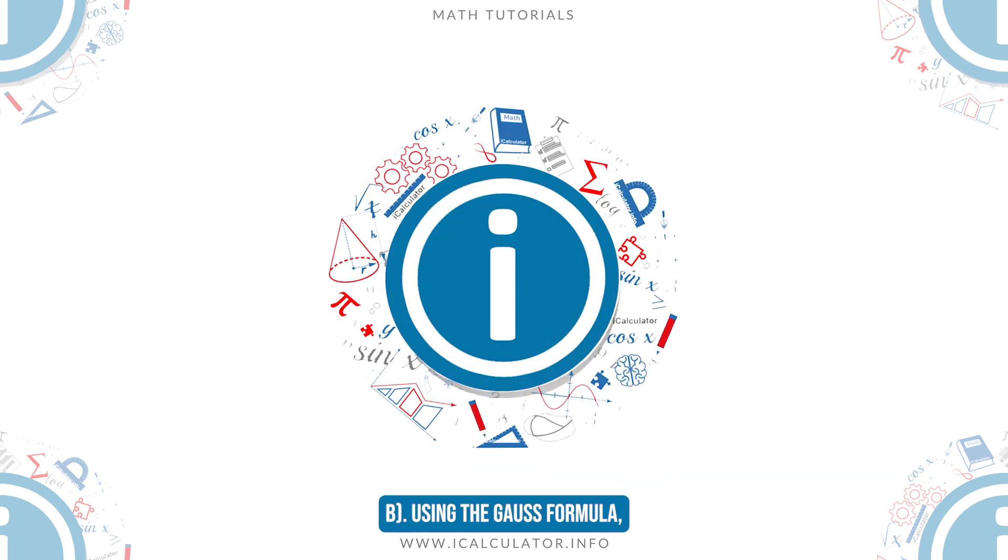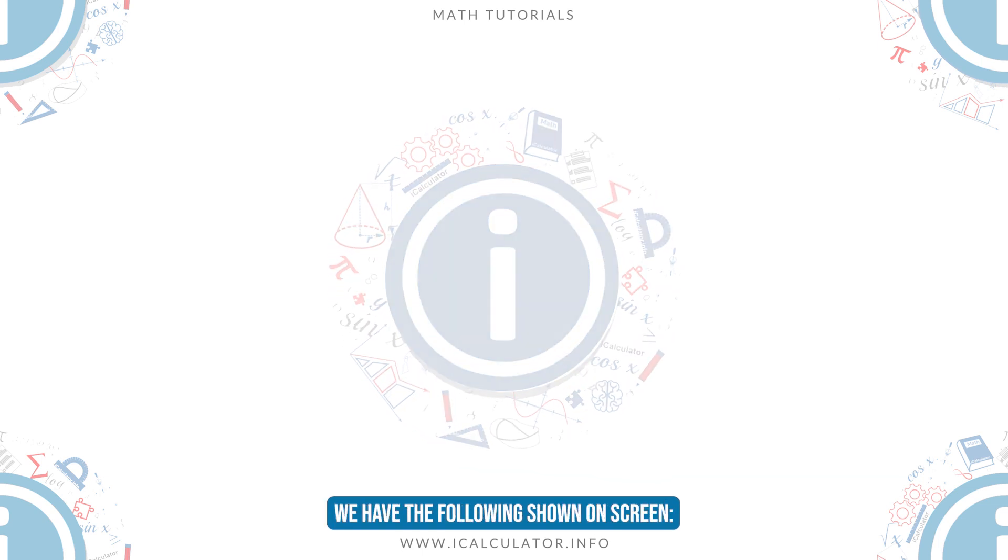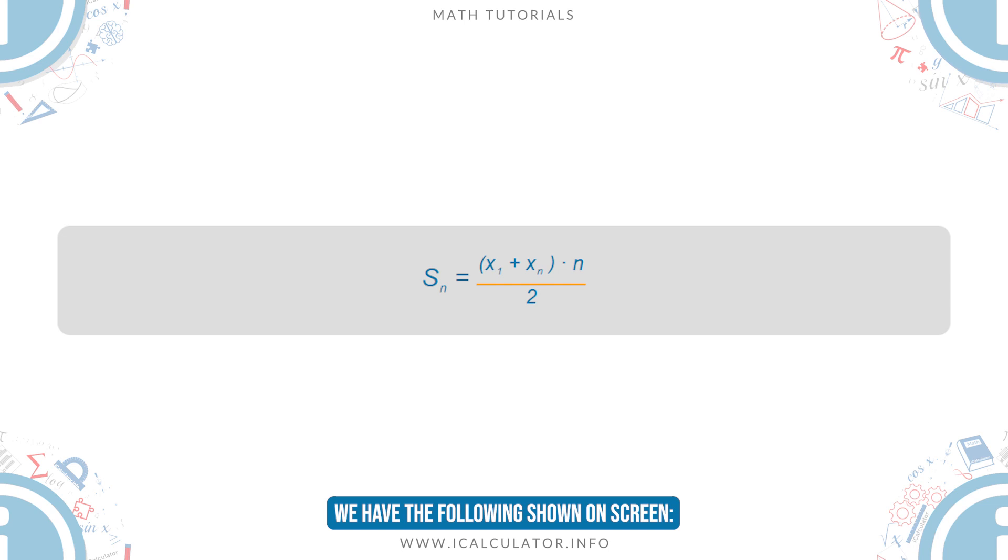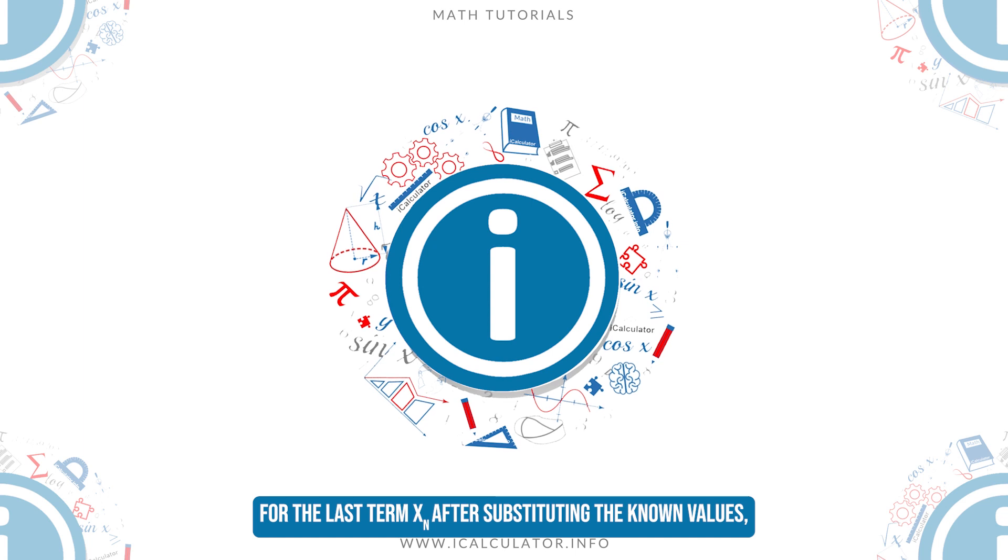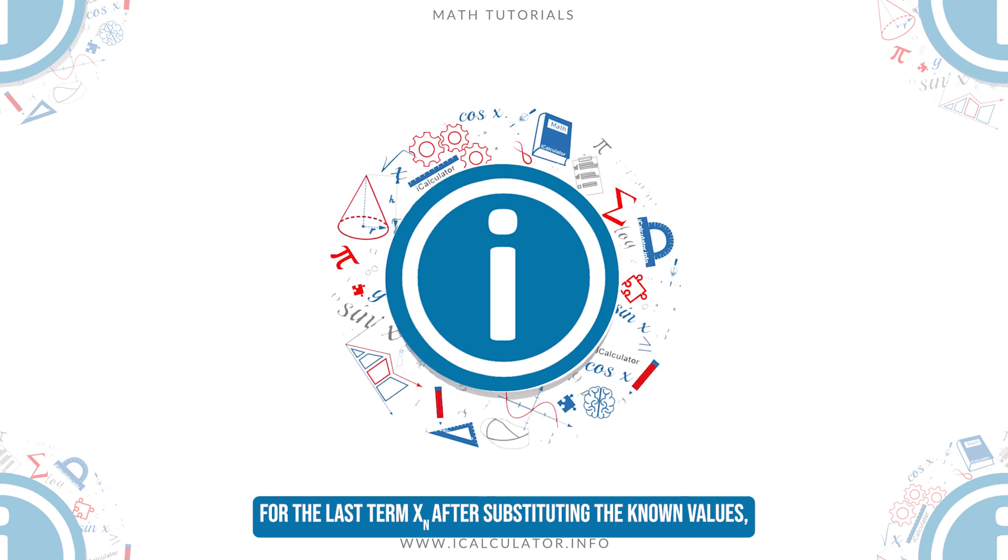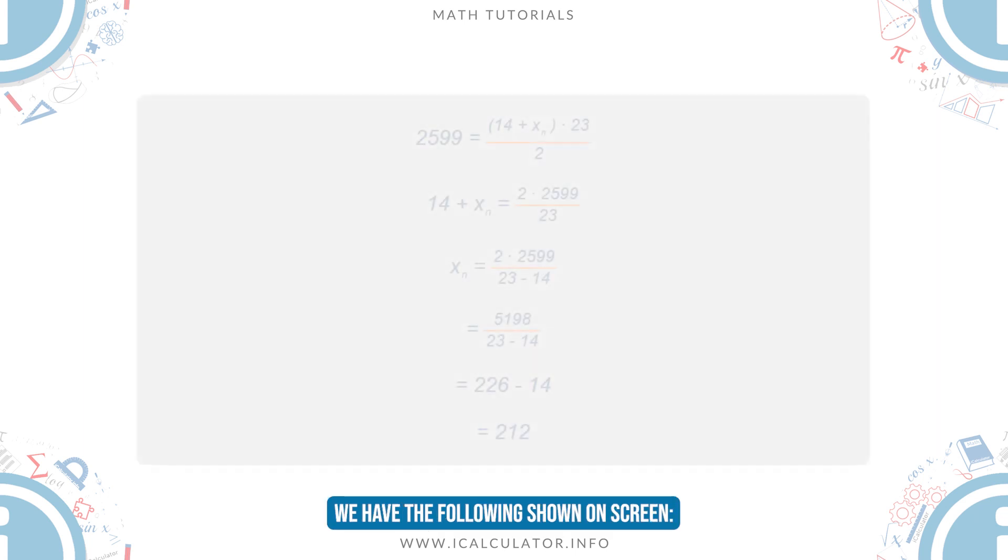B. Using the Gauss formula yields the last term xn. After substituting the known values, we have the following shown on screen.